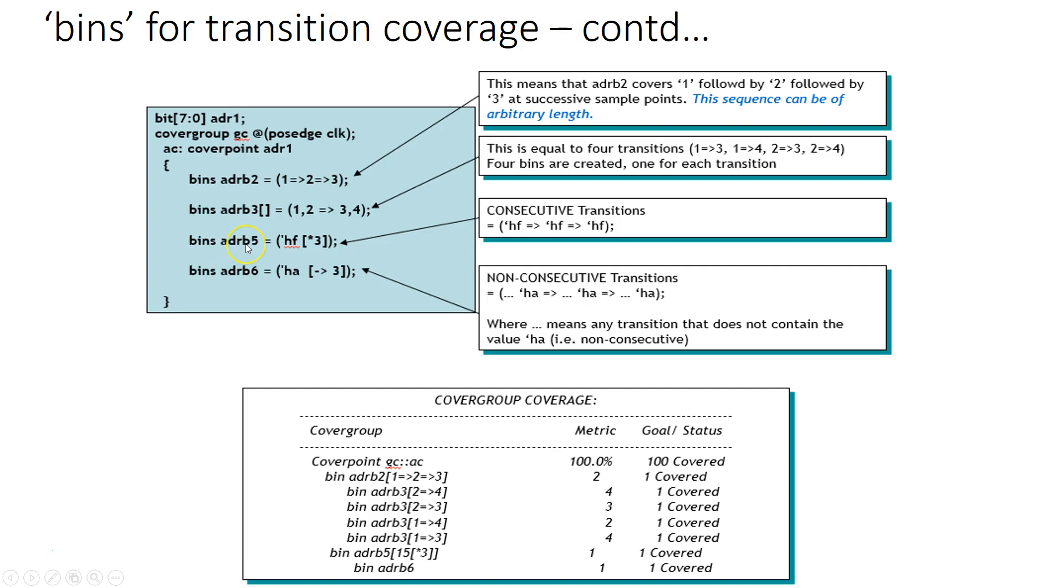Similarly bins ADRB5 states that address 1 should remain hex F for three consecutive clocks. Star 3 means three consecutive transitions. That means address 1 should go from hex F, next clock hex F, and next clock hex F. And in a similar manner ADRB6 states that hex A should transition non-consecutively. What that means is at a given clock edge you may have address 1 equal to hex A. Then after a few clocks later again it goes to hex A. And after a few clocks it may again go to hex A. But these three non-consecutive transitions must take place.